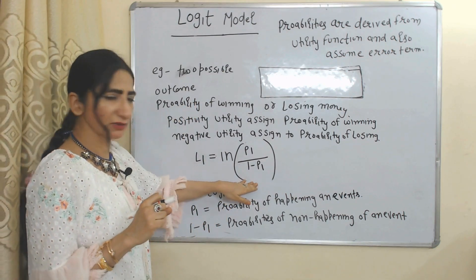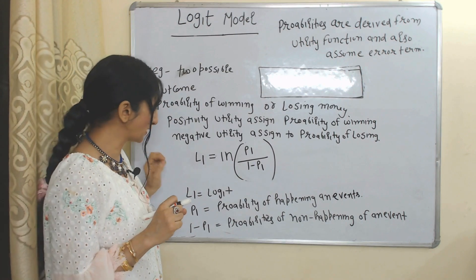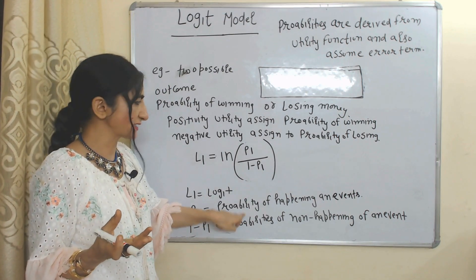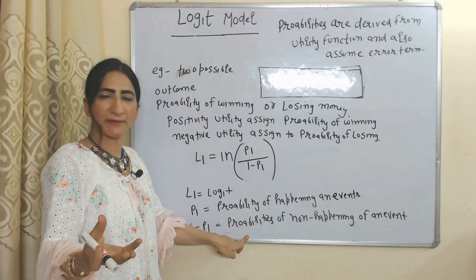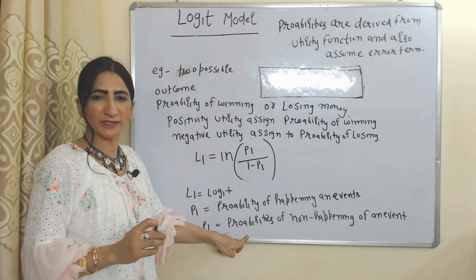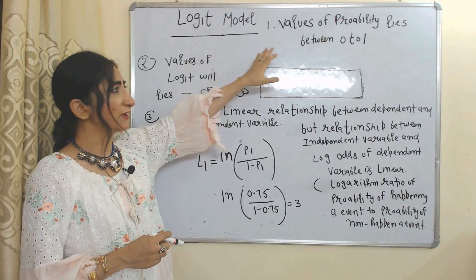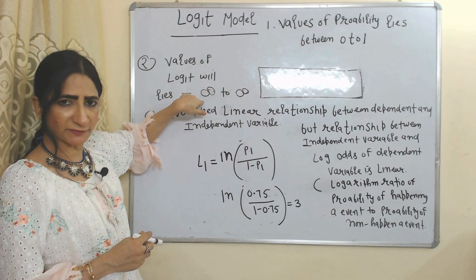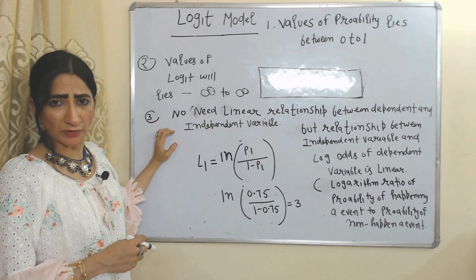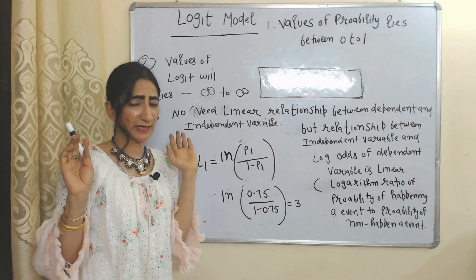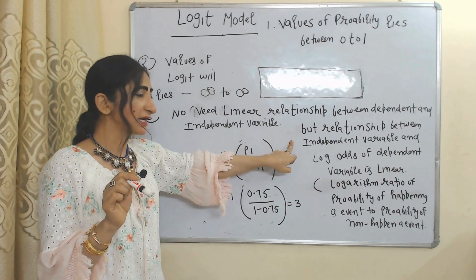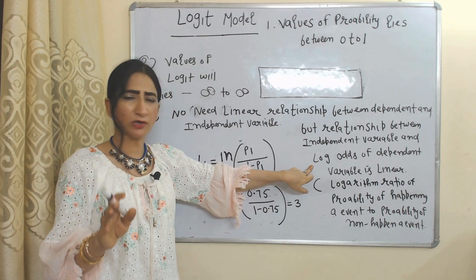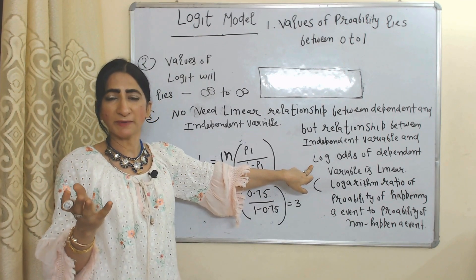This is an important equation to remember in the case of the logit model. L1 describes the logit function. P1 is the probability of an event happening — the probability of success. 1 minus P1 is the probability of the event not happening — the probability of failure. In the logit model, the value of probability lies between 0 and 1, and the value of the logit lies between minus infinity and infinity. There is no need for a linear relationship between the dependent variable and independent variable, but the relationship between the independent variable and the log odds of the dependent variable should be linear.